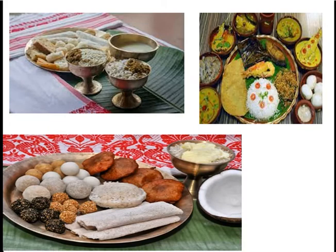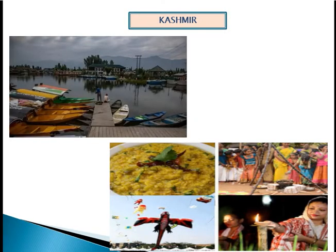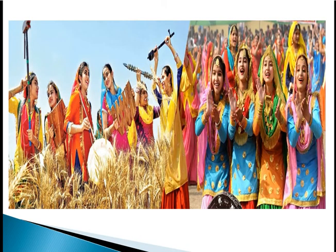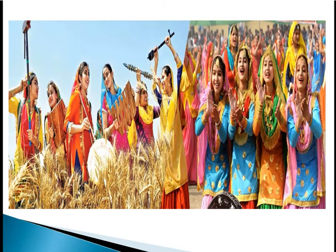During Makar Sankranti, people bathe in holy rivers, especially the Ganga, Yamuna, Godavari, Krishna, and Kaveri, which is believed to wash off past sins. Offerings and prayers for success and prosperity are made to the Sun God, who is regarded as a symbol of divinity and wisdom. Some of the world's largest pilgrimages, like Kumbha Mela, Ganga Sagar Mela, and Makara Mela, are held at this time. Food made with jaggery and sesame seeds is exchanged as it keeps the body warm and provides oil needed when winter dries up the body's moisture.